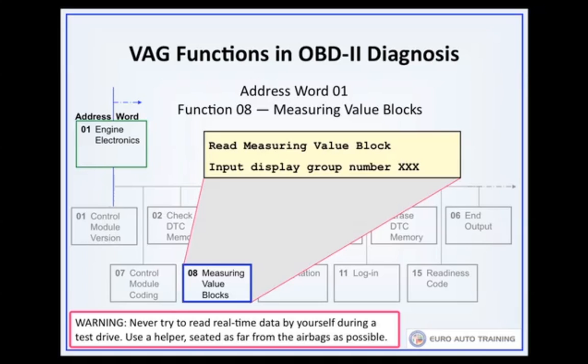Older engine control modules may only display the simplest values, while newer ones are able to display as many as 255 display groups. Display group 0 has 10 display fields. The others, starting with display group 1, have up to 4 each.